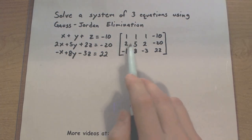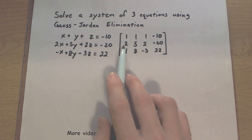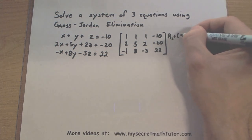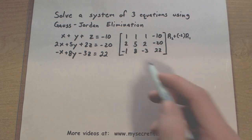So the first thing I want to do is get some zeros here and here. If I'm going to get a zero in the second row, that means I need to take the second row and add to it negative 2 times row 1, and that'll give me a new row 2.